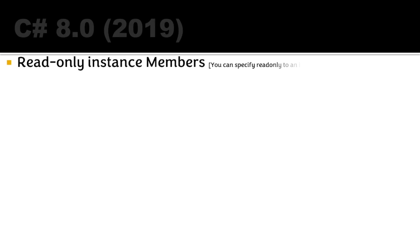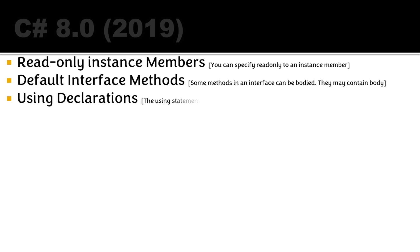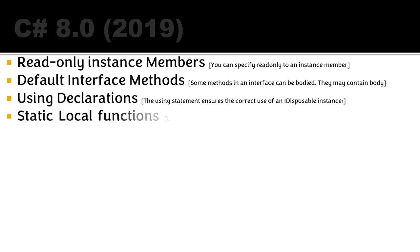C# 8.0, released in 2019, introduced readonly instance members. Default interface methods allow interfaces to have methods with a default body — something that wasn't possible before. The using declaration ensures correct use of IDisposable instances: an object placed within a using scope is automatically disposed when it goes out of scope.